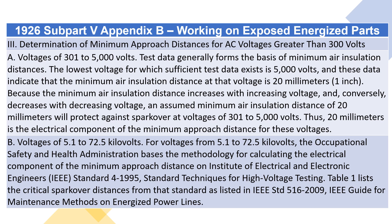Determination of minimum approach distances for AC voltages greater than 300 volts. Voltages of 301 to 5000 volts: test data generally forms the basis of minimum air insulation distances. The lowest voltage for which sufficient test data exists is 5000 volts, and these data indicate that the minimum air insulation distance at that voltage is 20 mm (1 inch). Because the minimum air insulation distance increases with increasing voltage and decreases with decreasing voltage, an assumed minimum air insulation distance of 20 mm will protect against sparkover at voltages of 301 to 5000 volts. Thus, 20 mm is the electrical component of the minimum approach distance for these voltages.